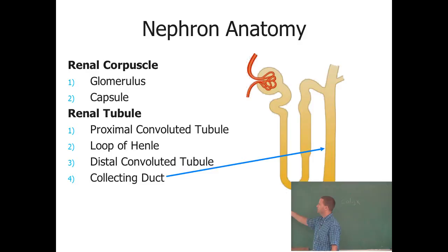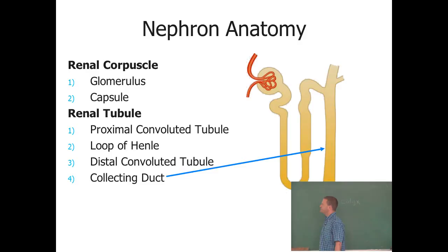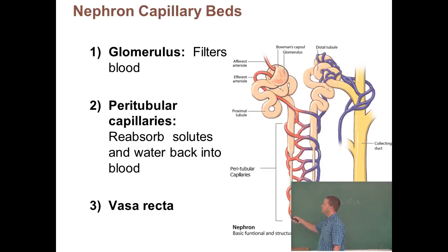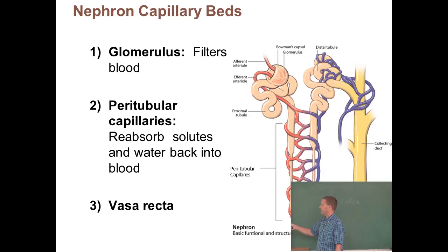Anything that leaves the capillary bed, is filtered out, and stays in the tubule without being pulled back out will become part of the urine. The peritubular capillaries surround the loop of Henle, because another process that happens in a nephron is reabsorption — fluid in the tubule can be drawn out and reabsorbed back into the bloodstream via these peritubular capillaries.